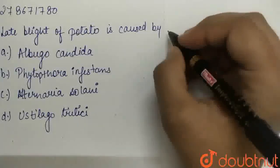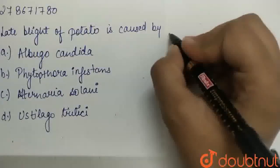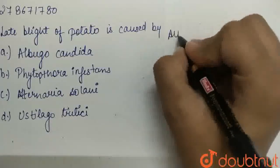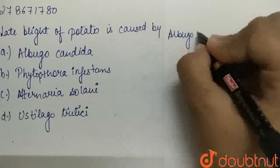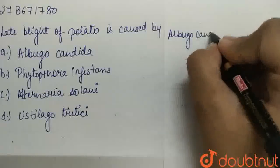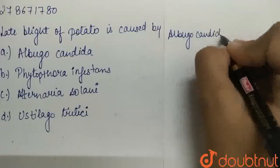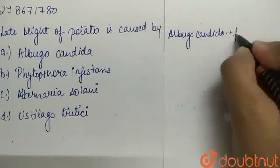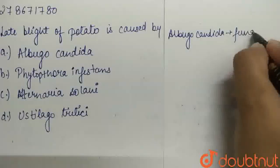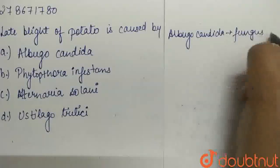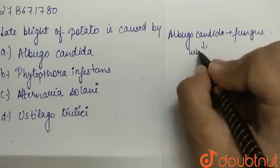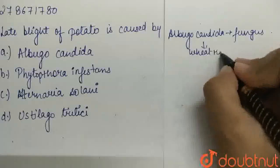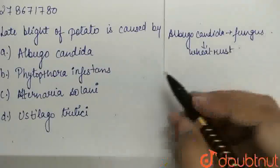The first organism is Albugo Candida. It is a fungus. What disease does it cause? It causes white rust of crops.